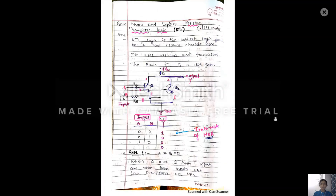Let us come to the circuit and working. The question is: draw and explain the resistor transistor logic, that is RTL. RTL is the earliest logic family that was designed. It uses resistors and transistors. In the circuit diagram, there are two resistors, two transistors, and plus VCC. The two resistors RB1 and RB2 are connected to the bases of transistors Q1 and Q2 respectively. These are the base resistances connected into the base of Q1 and Q2.